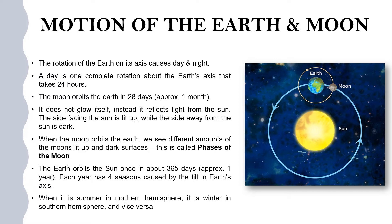Day and night are caused by the Earth spinning on its axis. So what do we call a day? A day is one complete rotation about the Earth's axis that takes around 24 hours.